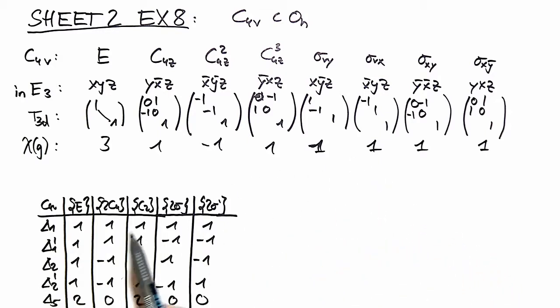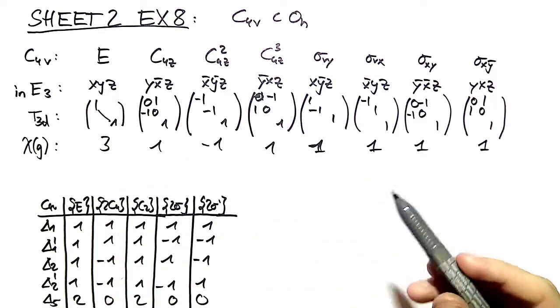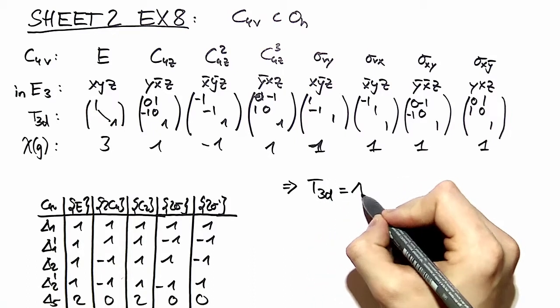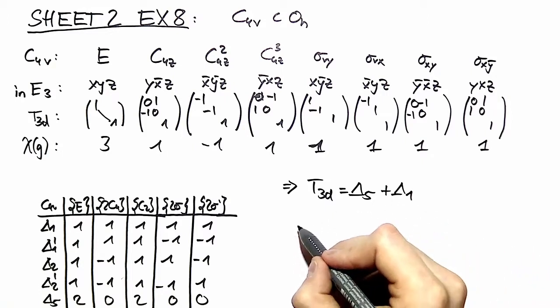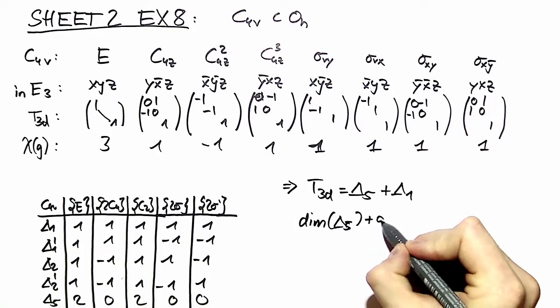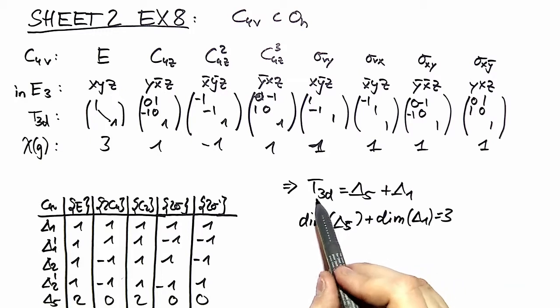Now we look at the character table over here and see via trial and error which irreducible representations to add to get these characters. Therefore, we conclude that T3D equals δ5 + δ1, and a quick sanity check gives that the dimension of δ5 plus the dimension of δ1 is indeed 3, which is the dimension of our T3D representation.